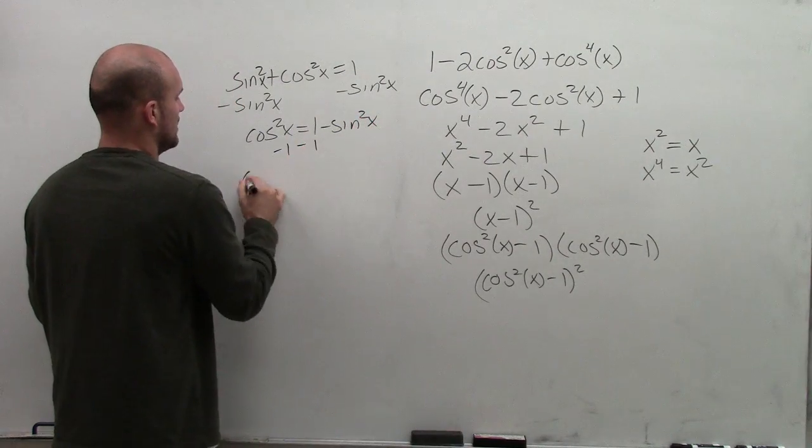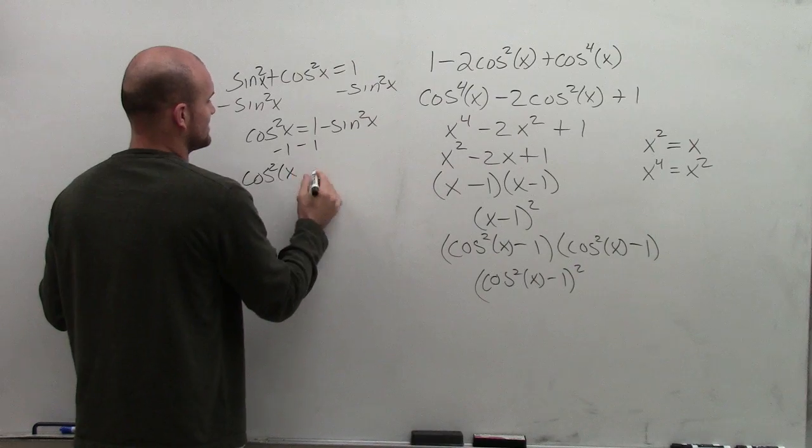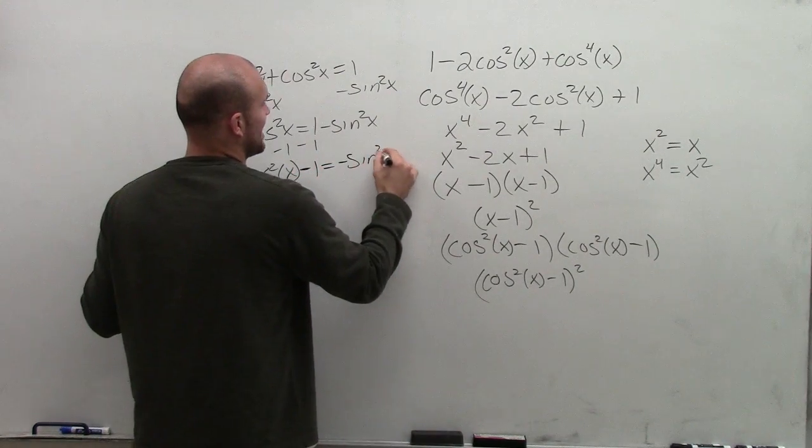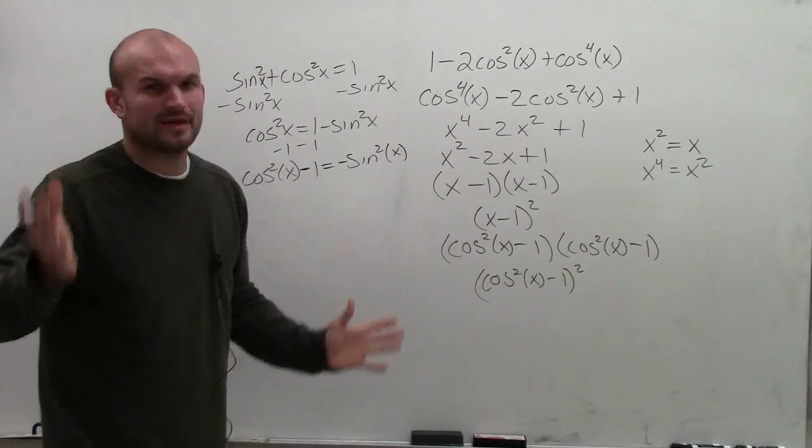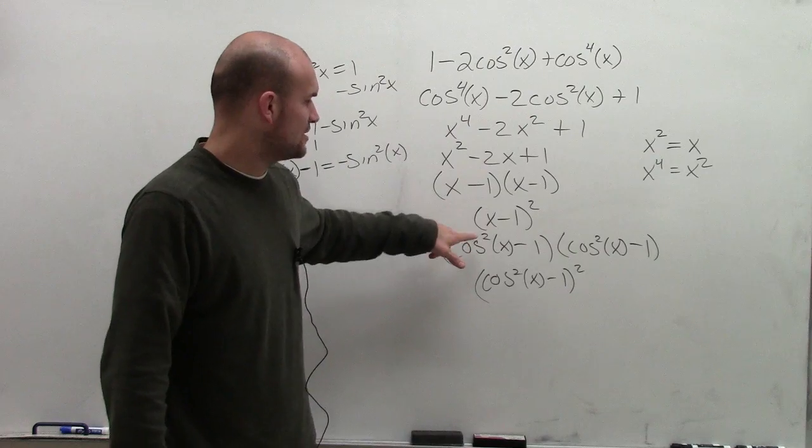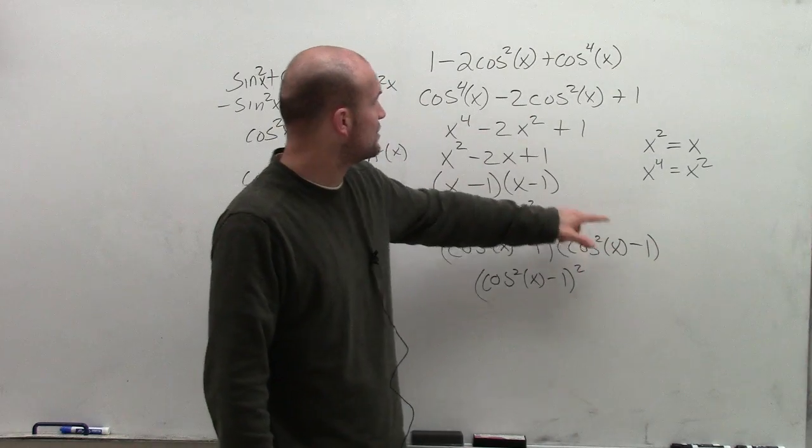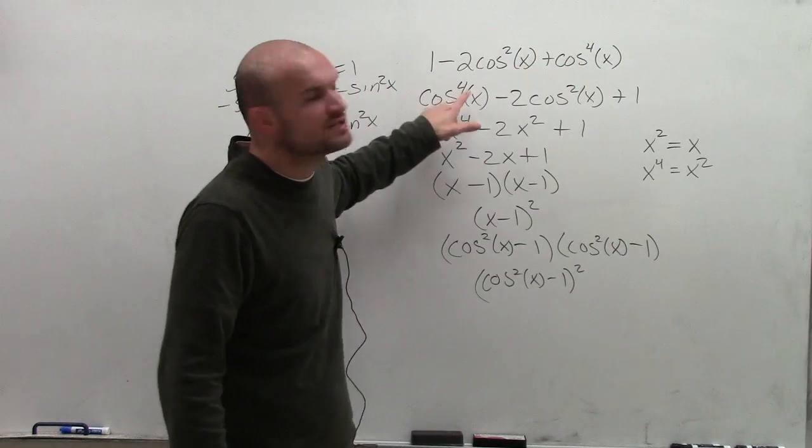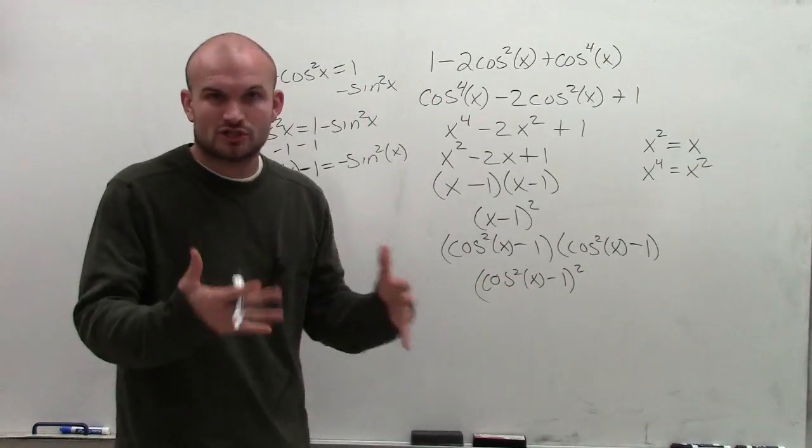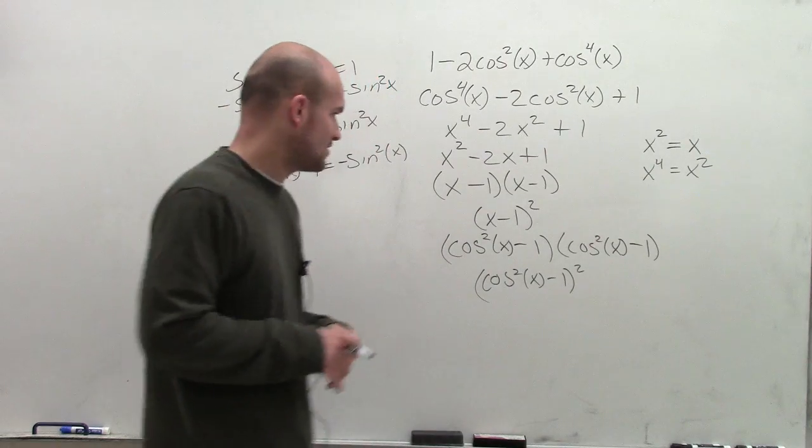And then subtracting the 1, I get cosine squared of x minus 1 equals negative sine squared of x. Let's just double check this works. Cosine squared times cosine squared of x equals cosine to the fourth x, and negative 1 times negative 1 gives you positive 1. So we can check that's our answer.